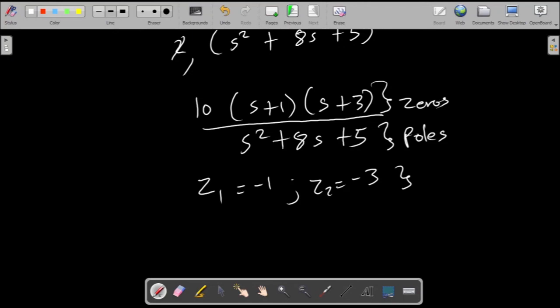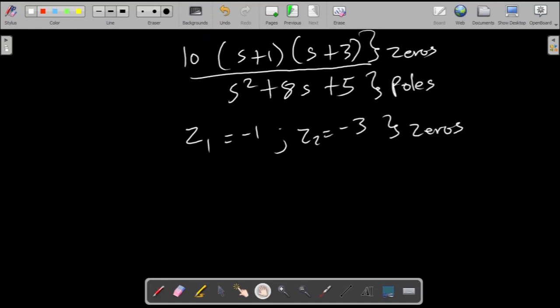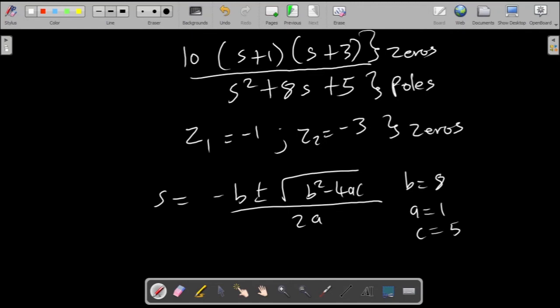And at the bottom I guess you have to use this formula: negative b plus or minus square root of b squared minus 4ac, divided by 2a. The b in this case would be 8, a would be 1, and c is 5.